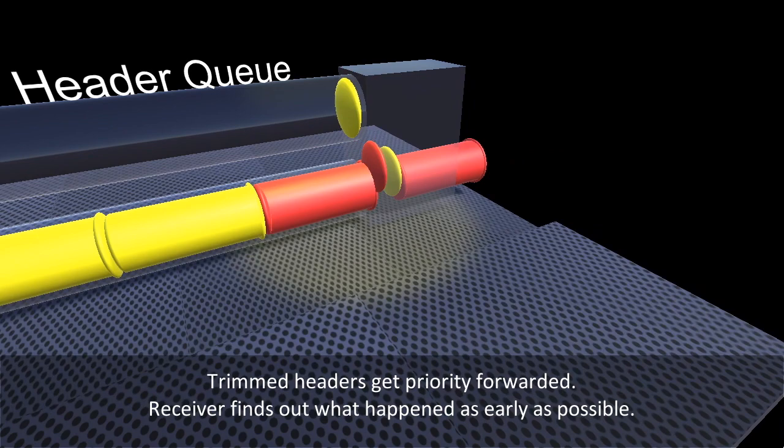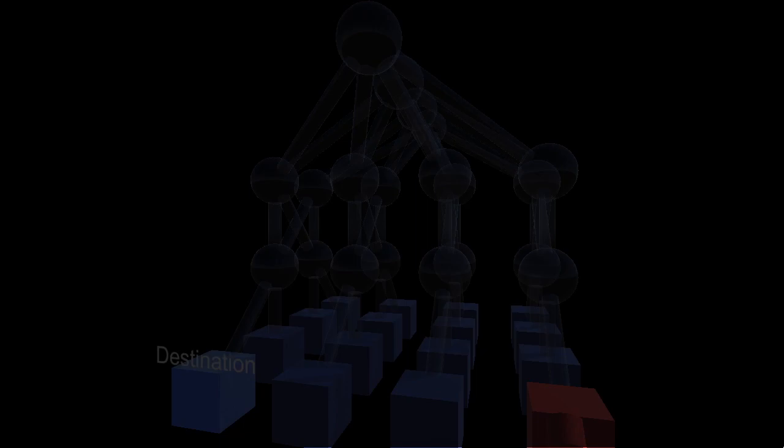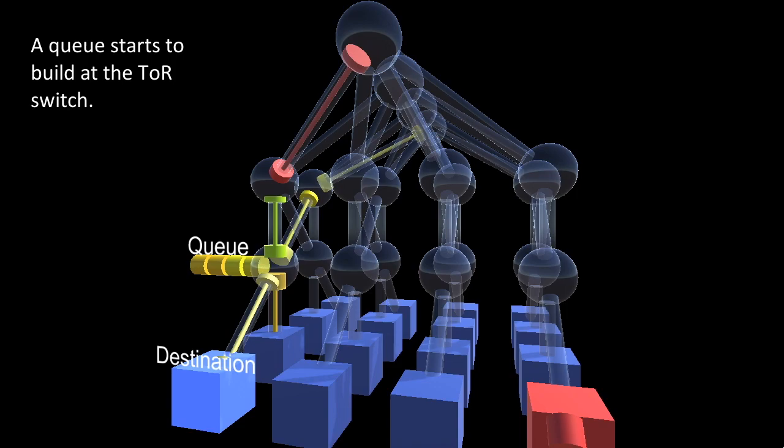We also priority forward ACKs, NACKs, and other control packets. And this lets us do really fast retransmissions. OK, let's see this in action. We'll have a whole load of senders all send one packet to the destination. We'll get an incast at the last top of rack switch. Now watch the red packet.